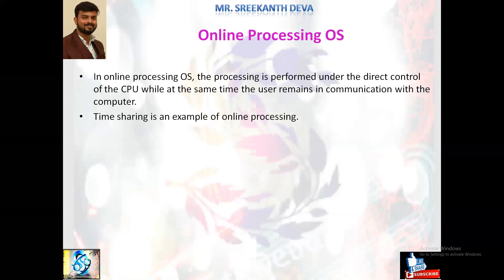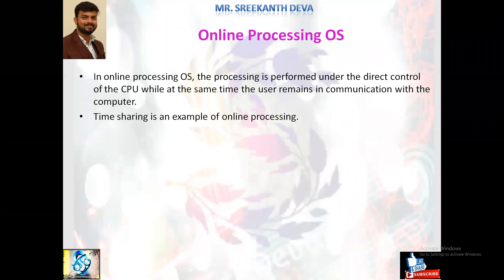Online processing operating systems are used all over the internet. Small to enterprise web-based and desktop applications use online processing for their customers. For example, when you purchase something on the internet it is handled by an online processing system. In online processing, the processing is performed under the direct control of the CPU while the user remains in communication with the computer. High capacity memory is required so that user data, operating system elements, and programs can be stored and accessed quickly.